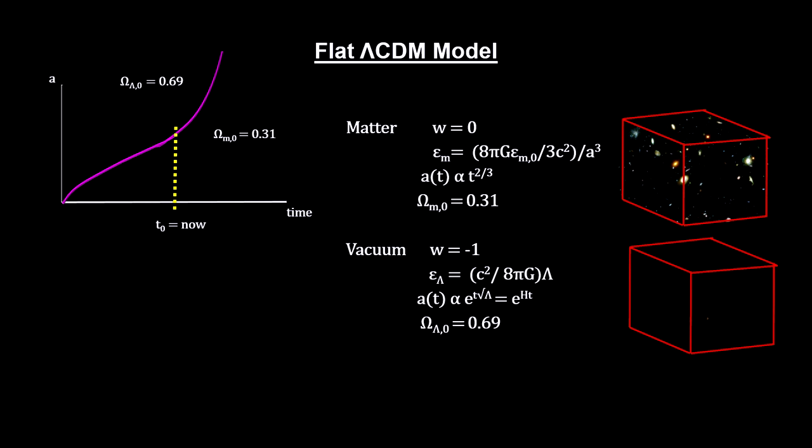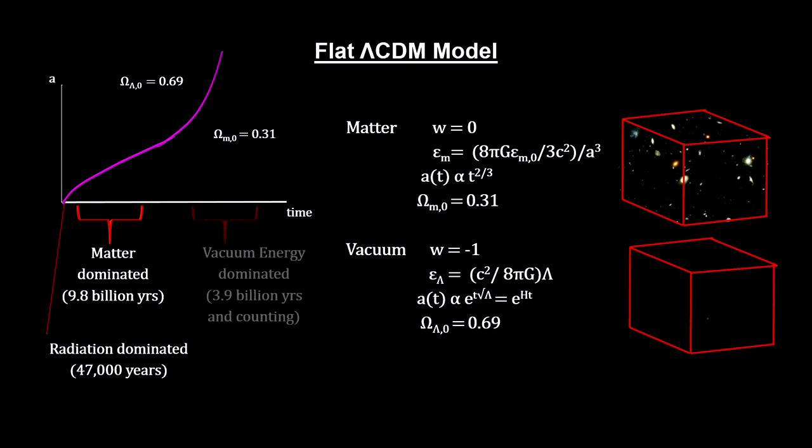Under this model, the universe was matter-dominated for most of its existence since the Big Bang. It was radiation-dominated for a mere 47,000 years, matter-dominated for 9.8 billion years, and currently in transition to complete vacuum energy domination.